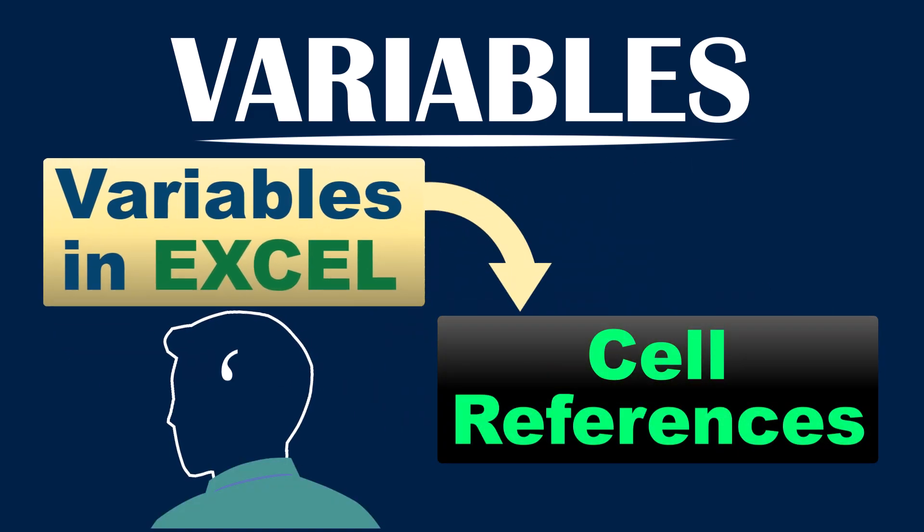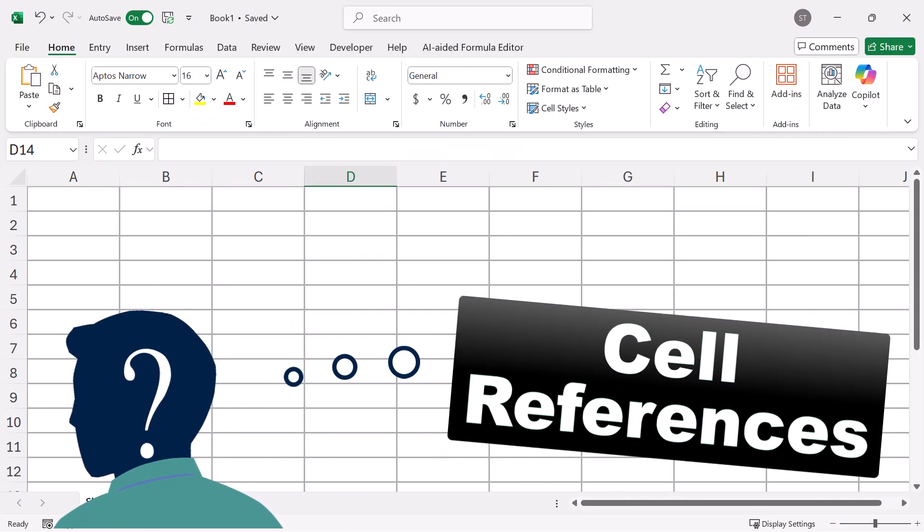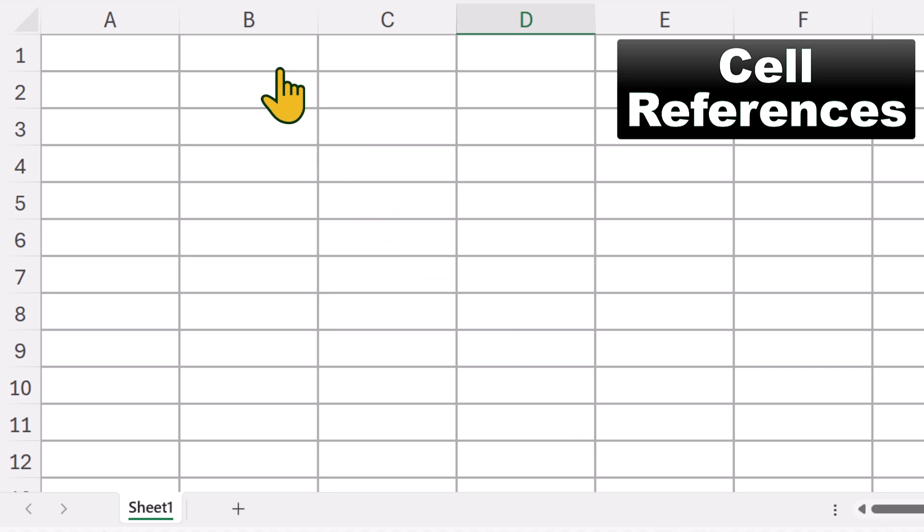But first, what is a cell reference? Well, as you may know, an Excel worksheet is a grid of vertical columns and horizontal rows. The vertical columns have generic names represented by letters, such as column A, column B, and so on. Similarly, the horizontal rows also have generic names represented by numbers, such as row 1, row 2, and so on. As these columns and rows intersect each other, they form many small boxes. These boxes are called cells. Each cell gets its name from the intersecting column and row. For example, the name or reference of this cell here is D5 because it is in column D in row 5.